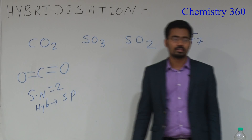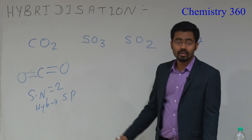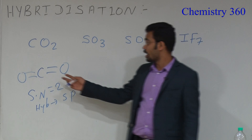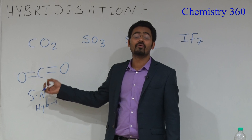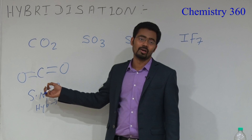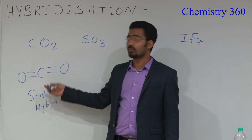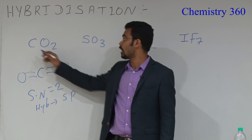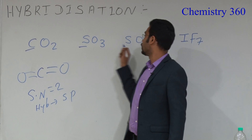Got it? There is no lone pair. Carbon has only 4 electrons, and you have to find the hydrogen of the central atom only.